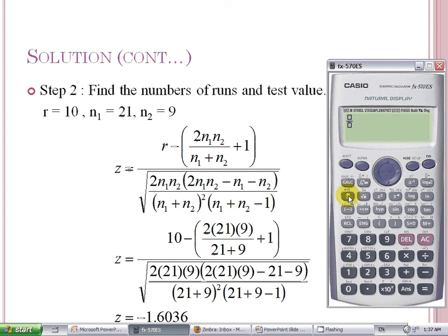We substitute the values of R, N1, and N2 into the formula to get the value of Z. So it will be alpha A minus something in bracket, and we have fraction 2 alpha X and Y divided by the alpha X plus alpha Y, and then plus 1, and we close the bracket.